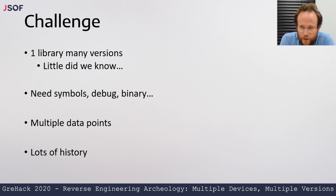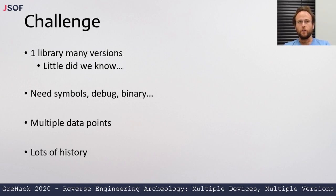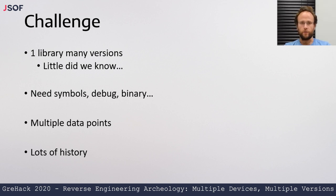The challenge we faced when we started looking into Ripple 20 — except for the fact that we at first didn't even know where to look or which devices to check — is that despite being one piece of code, there are many versions. Different vendors compile the code differently, use different parts of the code, and the code changes over the years. We knew at the start there'd be several differences between vendors, but little did we know how complex and different the devices would look. We needed debug symbols, the ability to perform debugging, the ability to get firmwares, and multiple data points from different years and different vendors to piece together the whole history.